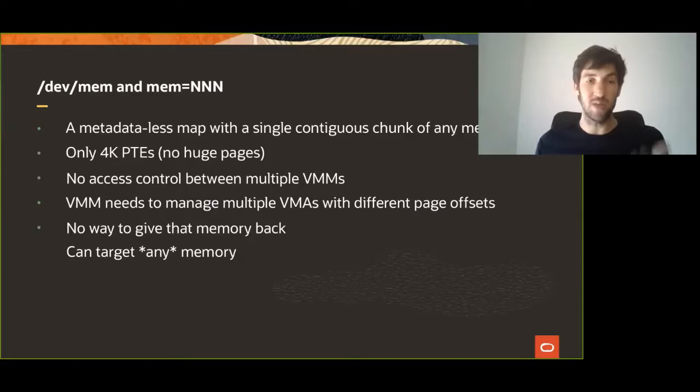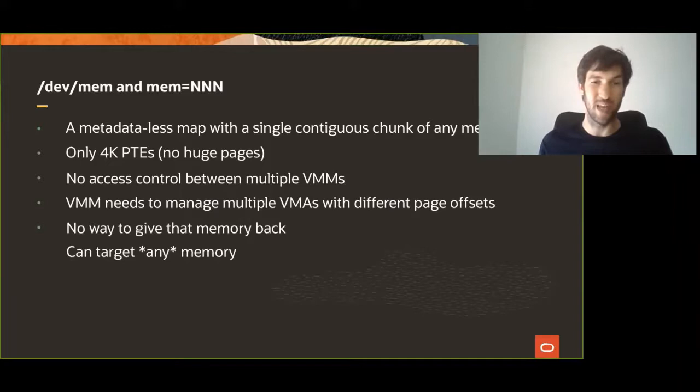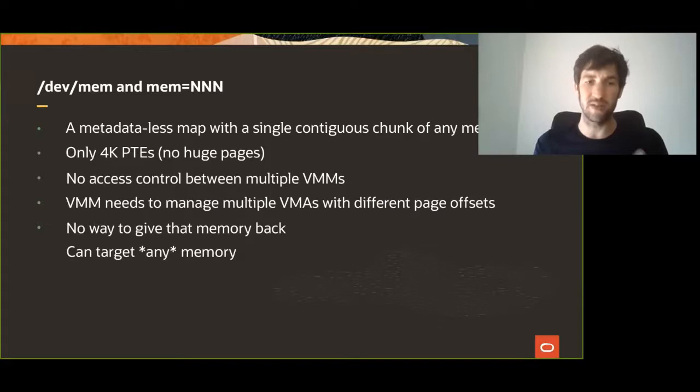In order to do that with /dev/mem, you need to map /dev/mem several times using different page offsets. But you still need to give /dev/mem access to a given VMM, which breaks the case where the VMM runs in a potentially deprivileged environment and therefore should not have been able to map any memory on the system. And finally, you don't have a way to give some of that memory back to the kernel to rescue the host from an out-of-memory situation.